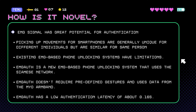The use of EMG signals for authentication has great potential due to their unique nature. The movements involved in picking up a smartphone are generally different for different individuals and consistent for a particular person due to the memory of their muscles.